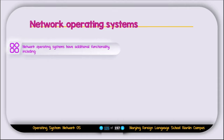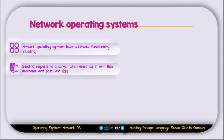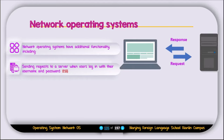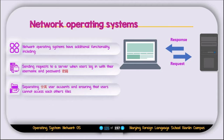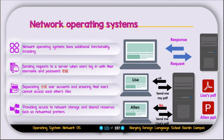The next type of operating system is called the network operating system. The network operating system has additional functionality, including: sending requests to a server when the user logs in with their username and password; separating user accounts and ensuring users cannot access each other's files; and providing access to network storage and shared resources such as network printers.